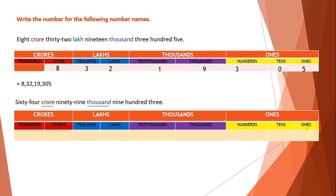Below Ones I wrote the place names: Ones, Tens, Hundreds. Below Thousands I wrote: Thousands and Ten Thousands. Below Lakhs I wrote: Lakhs. Below the Crore period I wrote: Crore and Ten Crore. Now we will write the digits according to periods. In the Ones period they are given 903, so I will write 903 in the Ones period.